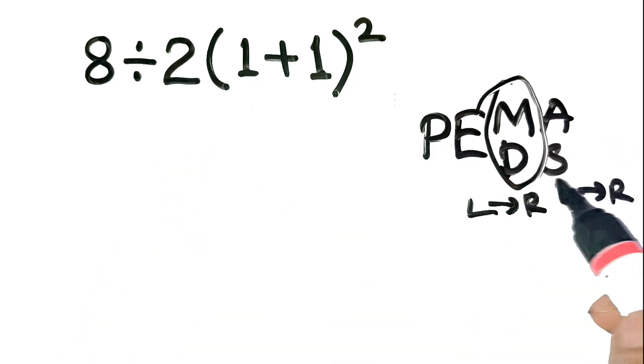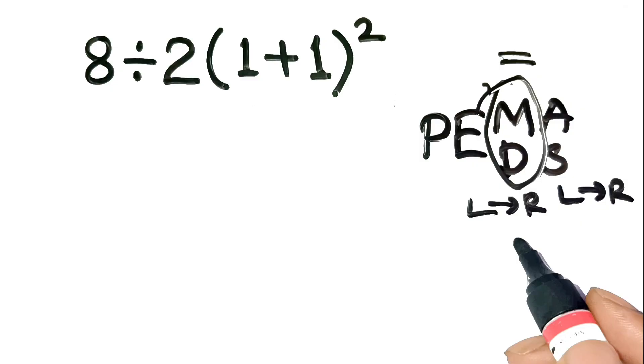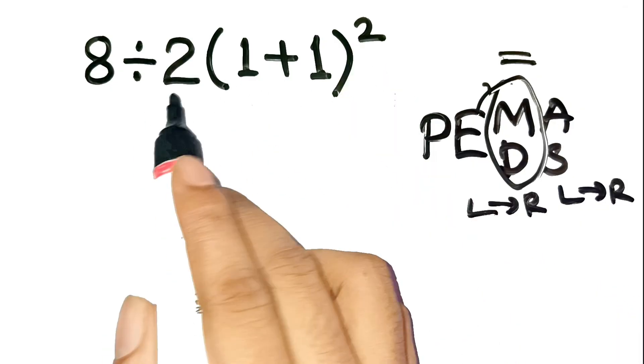Multiplication and division are treated equally, which means we always move left to right, not automatically multiplying the exponent first with the number outside.